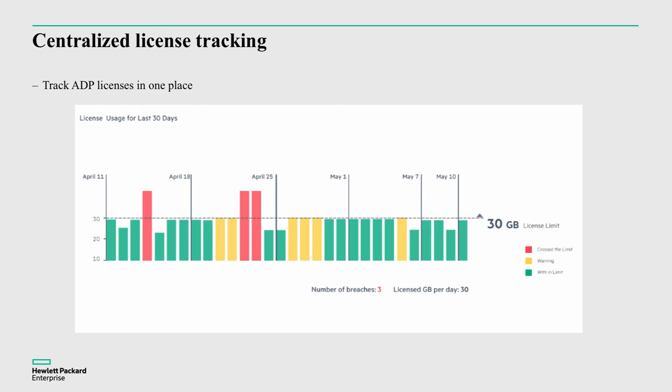ArcMC also includes centralized license tracking — the ability to understand how much data we're ingesting, from where, whether we're in breach of the license limit, and what actions to take. For example, whether we need to add additional capacity or look at ways of making the process more efficient.